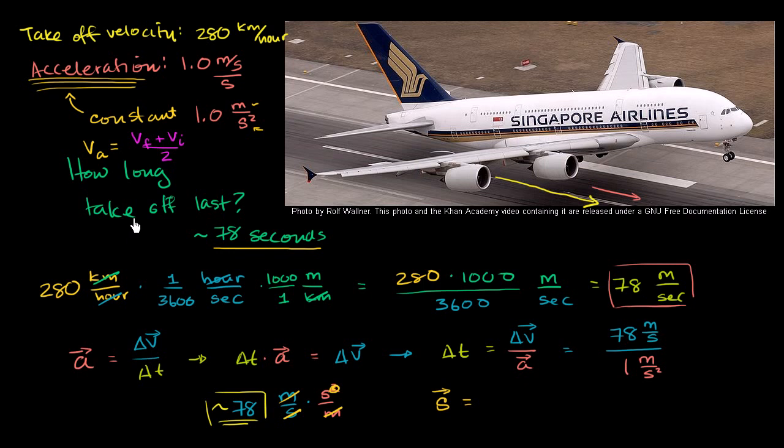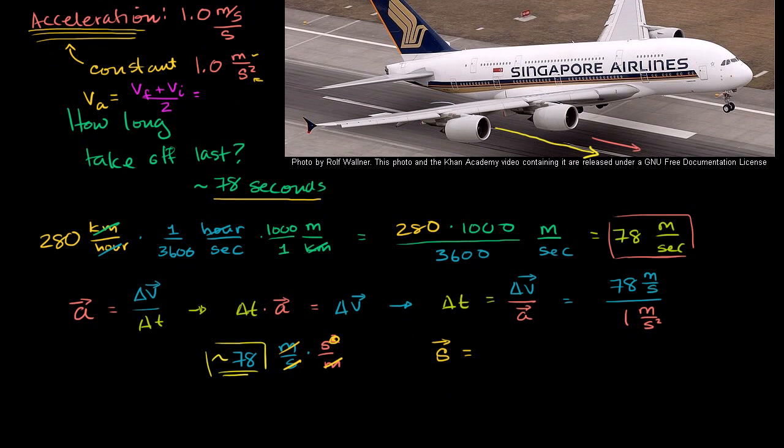And so in this situation, what is our average velocity? Well our average velocity, let's do it in meters per second, is going to be our final velocity, which is—let me calculate it down here. So our average velocity in this example is going to be our final velocity, which is 78 meters per second, plus our initial velocity. Well what's our initial velocity? We're assuming we're starting at a standstill. Plus 0, all of that over 2. So our average velocity in this situation, 78 divided by 2, is 39 meters per second.